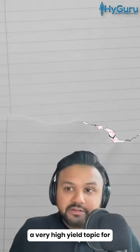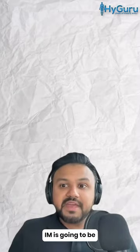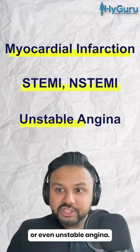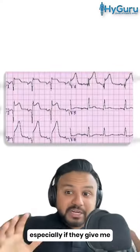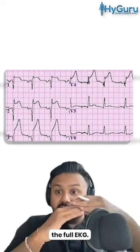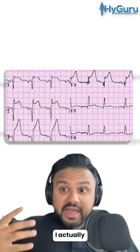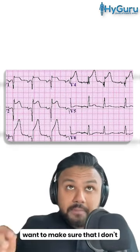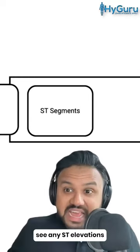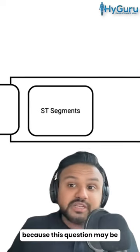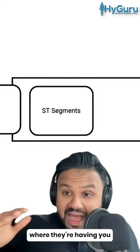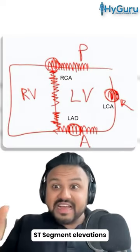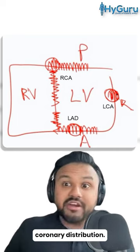A very high yield topic for internal medicine is going to be myocardial infarctions — STEMI, NSTEMI, or even unstable angina. So the next thing I look at is ST segments. Especially if they give me the full EKG, I want to make sure I don't see any ST elevations, because the question may be a heart attack question where they're having you look at the leads, the ST segment elevations, and the coronary distribution.